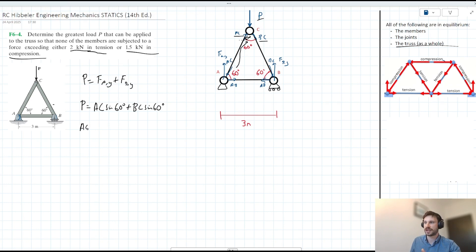One thing we know as well is that since we're dealing with an equilateral kind of geometry here, we can infer that AC and BC are equal in value. So we could say AC is equal to BC, therefore we could kind of simplify this, or we could eliminate one of the unknowns here. We could say P is equal to 2 AC sin 60. Makes sense?